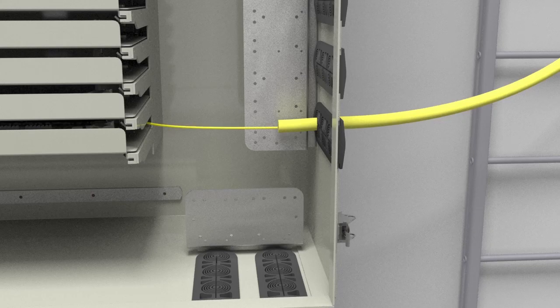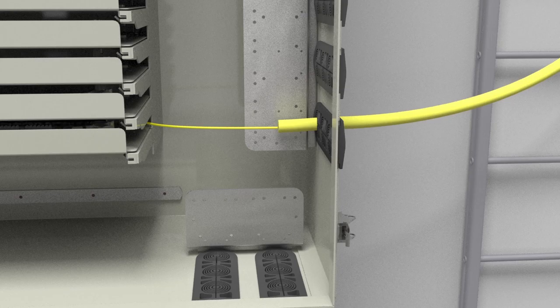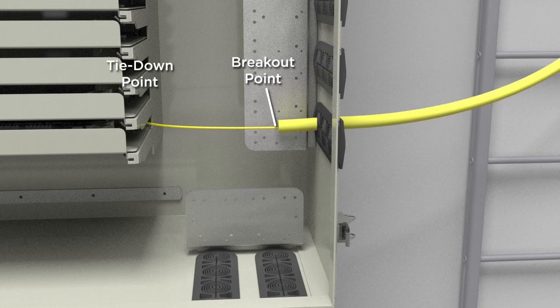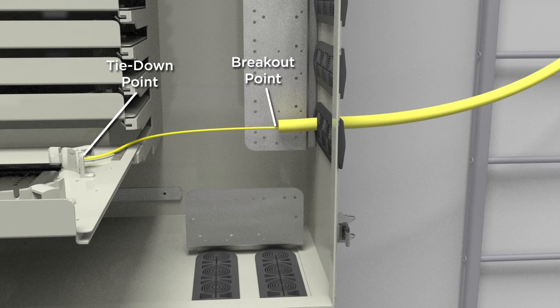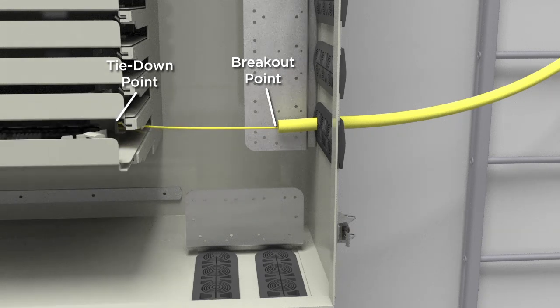Inside the cabinet, once the fiber cables have been opened and dressed, determine the length of cable required from the breakout point to the tie-down point on the splice tray. Make sure there's proper slack in the subunits so the tray can be fully opened and closed.